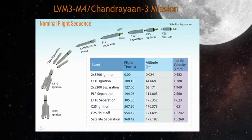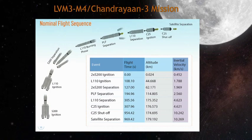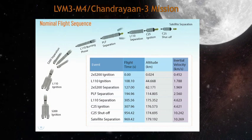Thereafter, the strap-ons will separate at 127 seconds past launch time, while the rocket is at 62 km altitude.